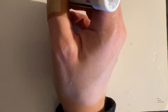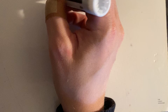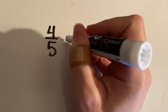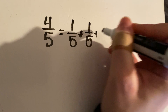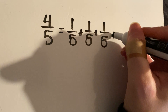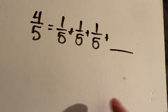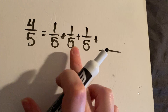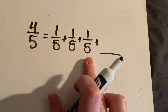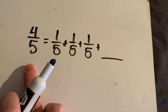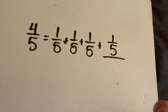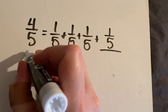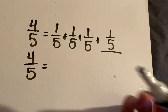In the first example, it gives you a fraction — like four fifths — and then it says equals one fifth plus one fifth plus one fifth plus blank. What's going to go in the last blank? If I have one plus one plus one, that's three fifths. What do I need to get to four fifths? That would be another one fifth, because three fifths plus one fifth is four fifths.